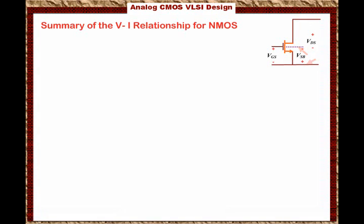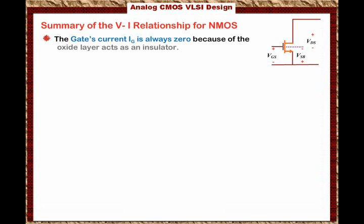There are a few notes we would like to describe in this summary. The first is that the gate current IG is always zero, because the oxide layer at the gate acts as an insulator.